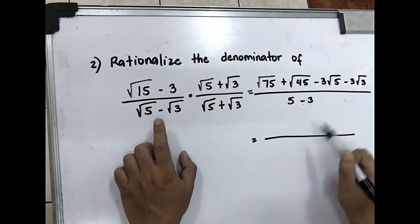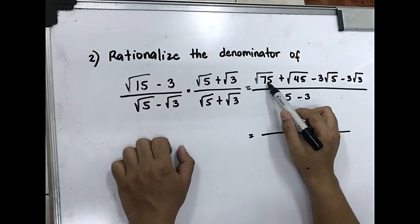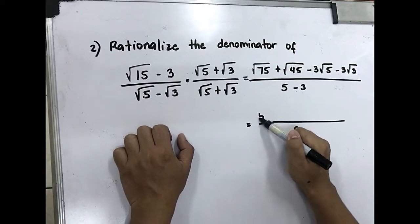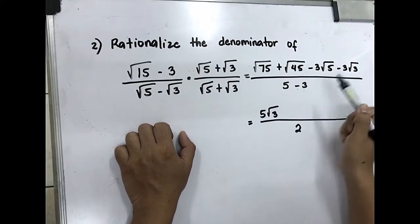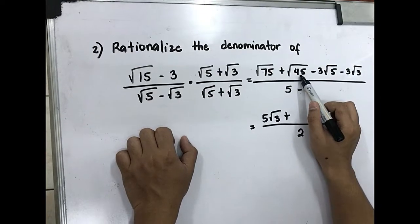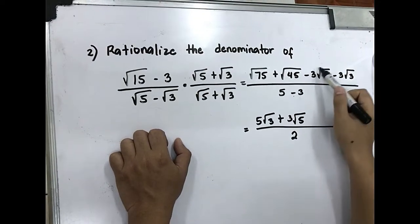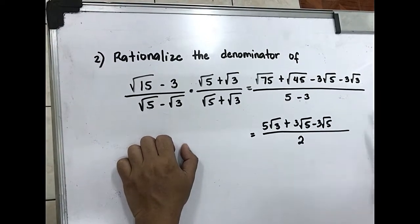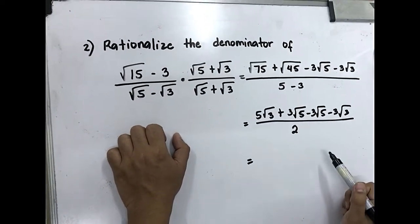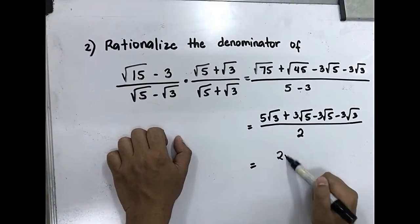Simplify: 5 minus 3 is 2. Square root of 75: factors of 75 are 25 times 3, so square root of 25 is 5, giving 5 square root of 3. Plus square root of 45: 45 is 9 times 5, so square root of 9 is 3, giving 3 square root of 5. Minus 3 square root of 5, minus 3 square root of 3. Combine like terms: 5 square root of 3 minus 3 square root of 3 equals 2 square root of 3.